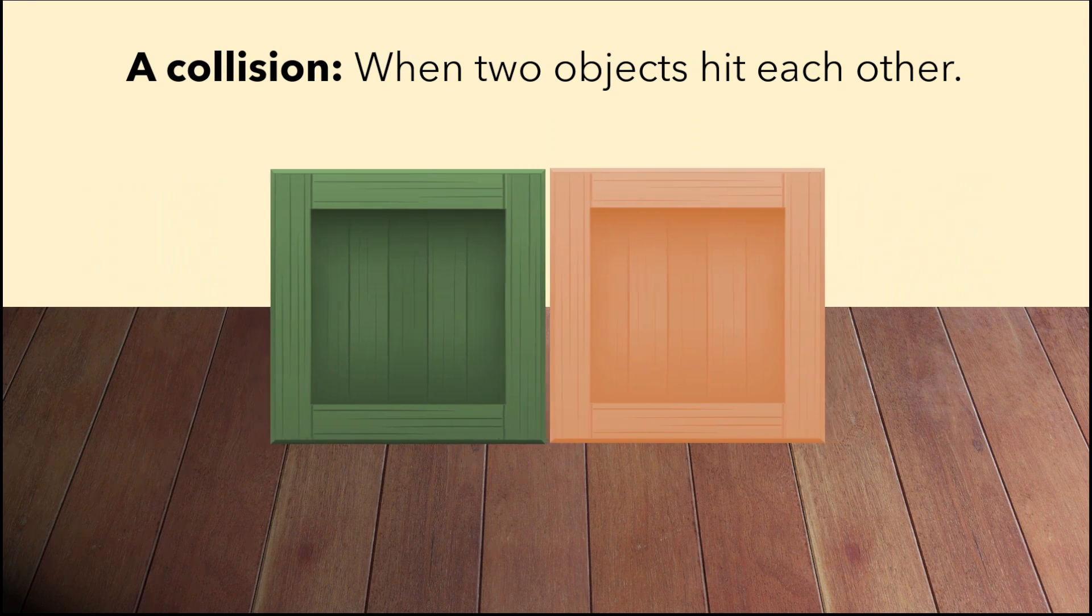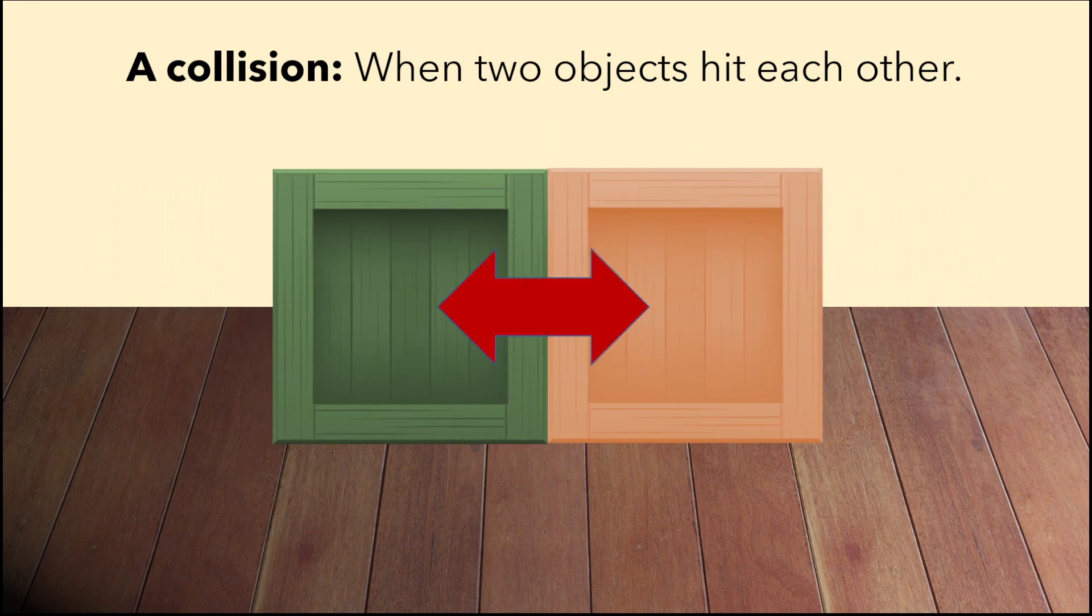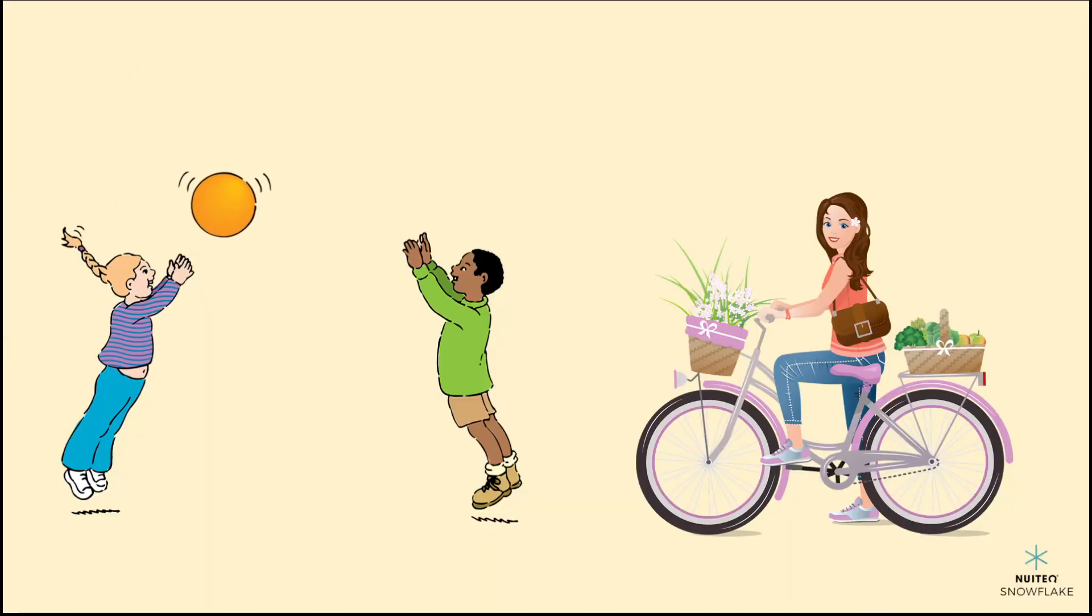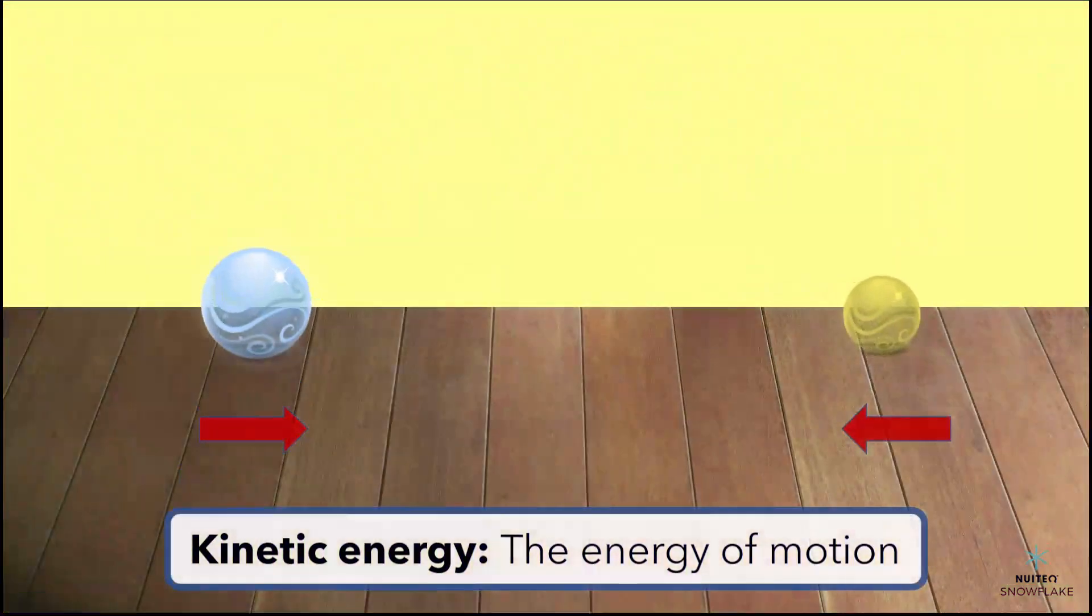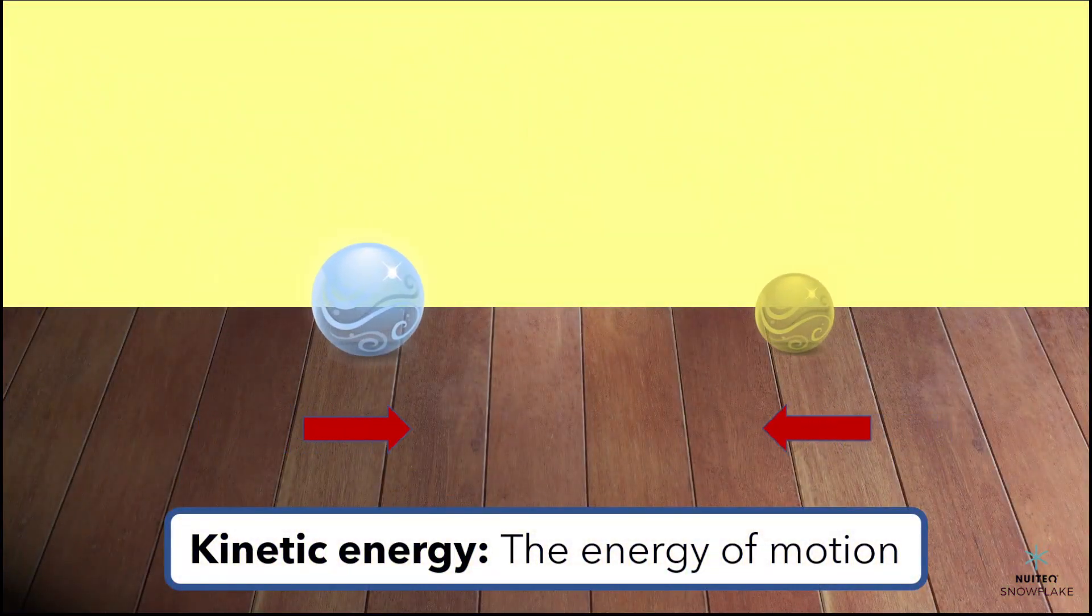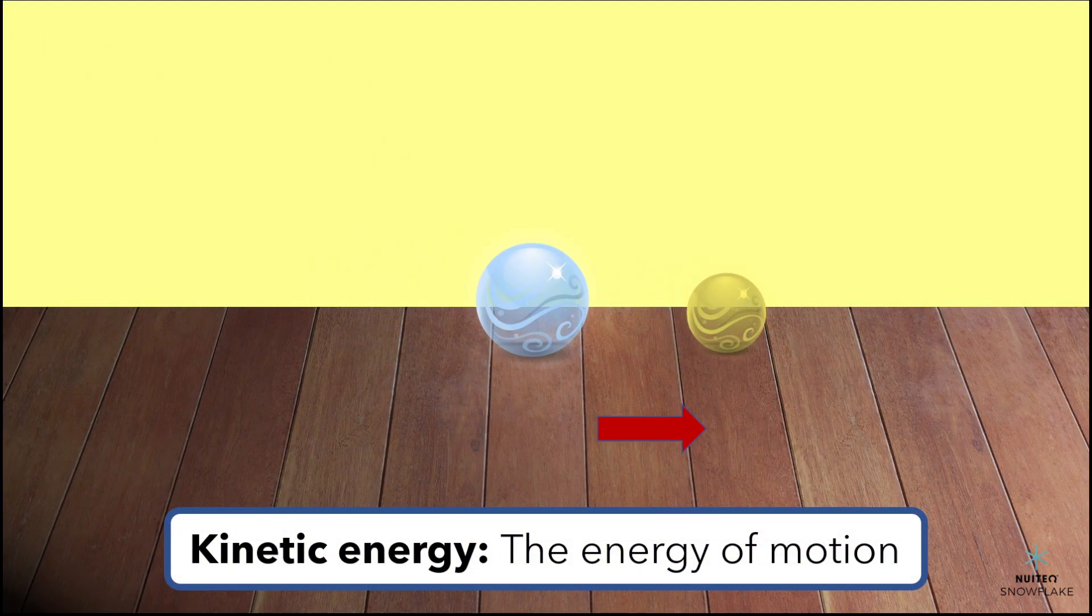Energy is what makes things happen, like when you throw a ball or ride a bike. One kind of energy is called kinetic energy, which is the energy of motion. When the marbles collide, they both have kinetic energy because they are moving. The energy from one marble gets transferred to the other marble, which causes the direction and speed of their motion to change.